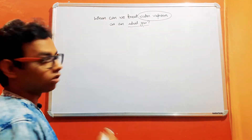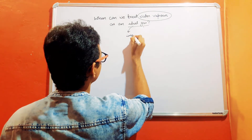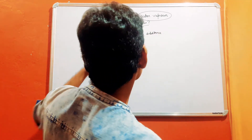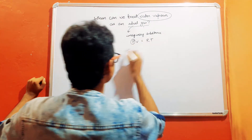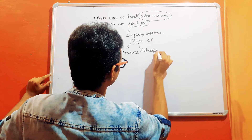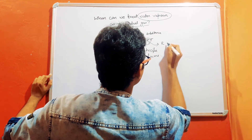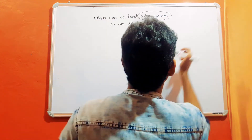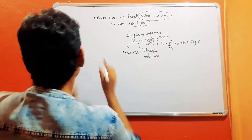First, let us see what an ideal gas is. An ideal gas is an imaginary substance which follows a very simple relation: PV = RT, where P is pressure, V is specific volume, R is the characteristic gas constant — not the universal gas constant, but the characteristic gas constant, which equals the universal gas constant divided by the molecular mass of that substance — and T is temperature.